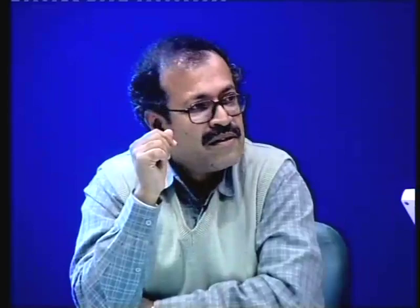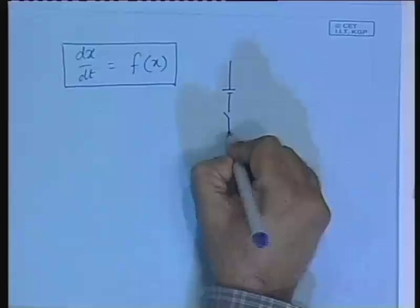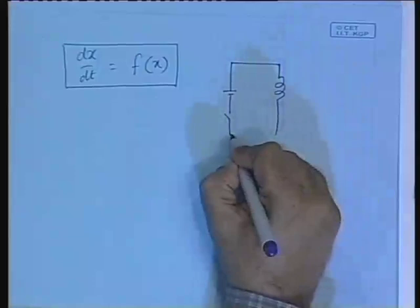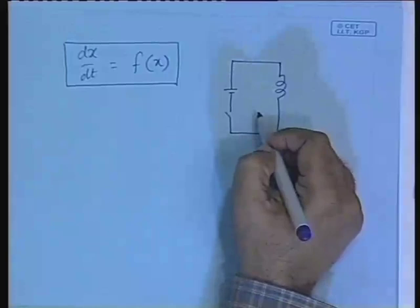If you write this differential equation like this, there are situations. For example, you have a voltage source, a switch, and then just an inductance. So this will be a one-dimensional dynamical system, but these are very rare.